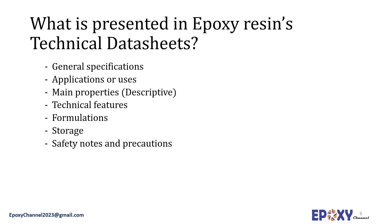In the application section, the main applications of the product are presented. For example, if the epoxy can be used for primers, adhesion direct to metals, for top coats for metals, or as coatings for concrete — all these things have to be presented here. Often the main properties of the epoxies are presented in this section in a descriptive manner: if it is a low viscosity or medium one, curing properties, if it is a fast cure or ambient curing system, its adhesion and flexibility features, corrosion protection properties, etc. This part serves as a quick guide for the customers to decide.